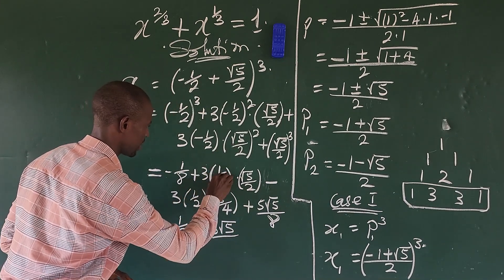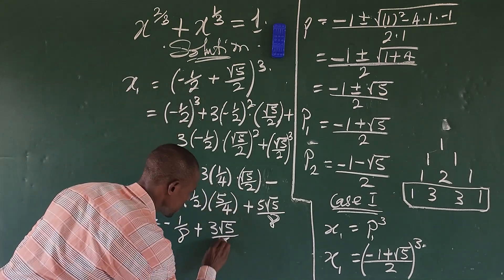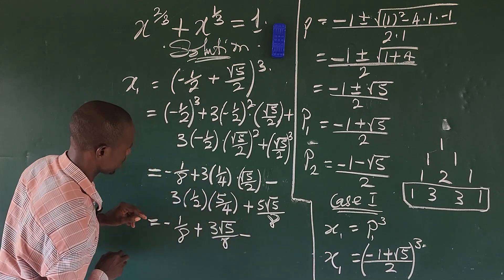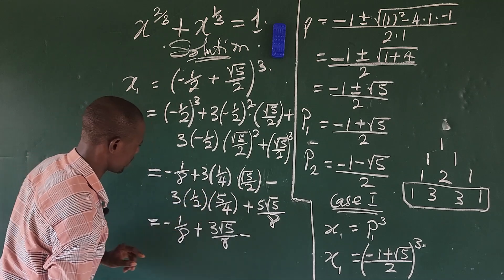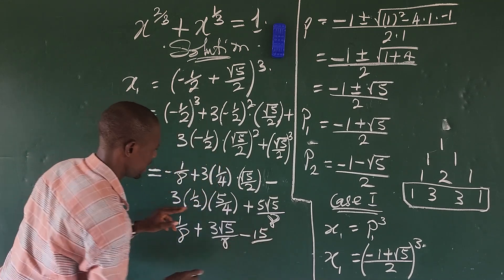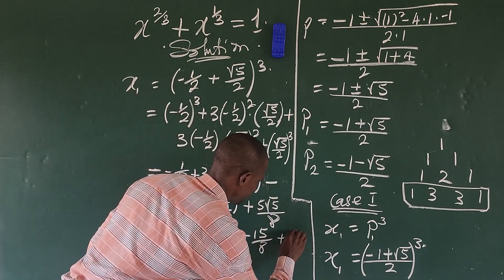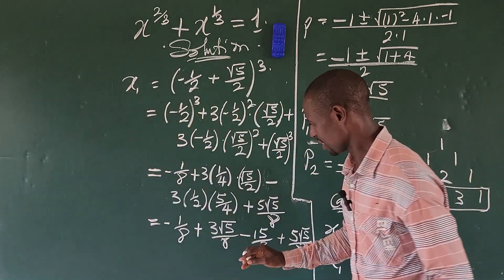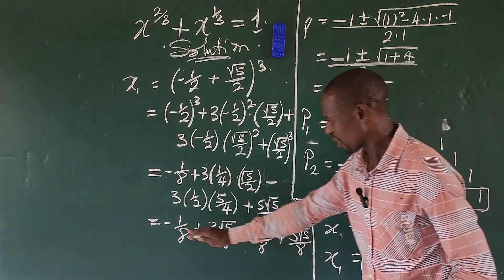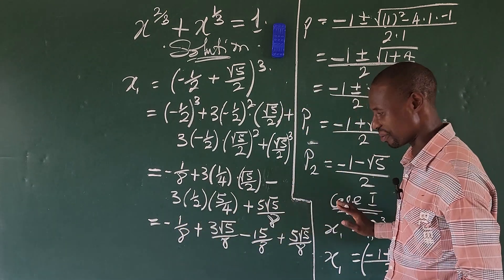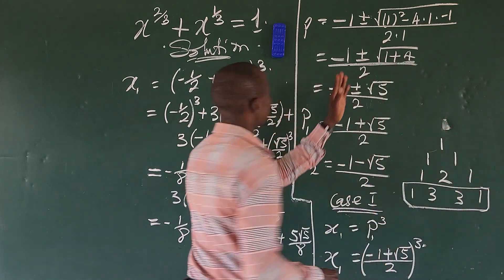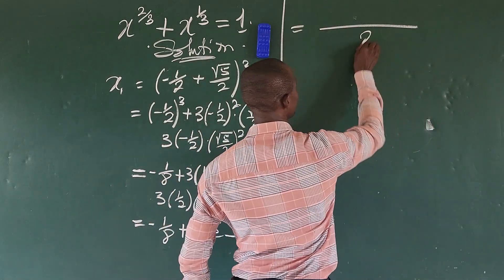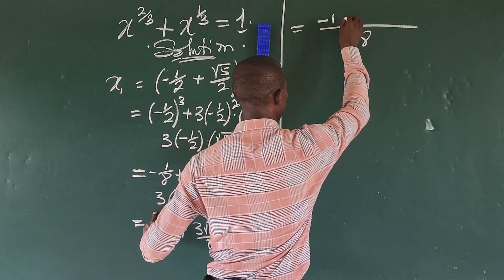Correcting the simplification: the third term gives negative three times one over two times five over four, which gives negative fifteen over eight. The LCM of the denominators is eight. Taking the LCM of eight, we collect all terms over eight.